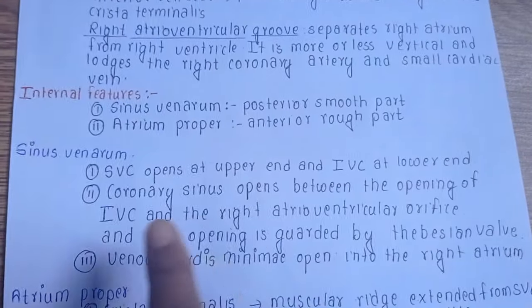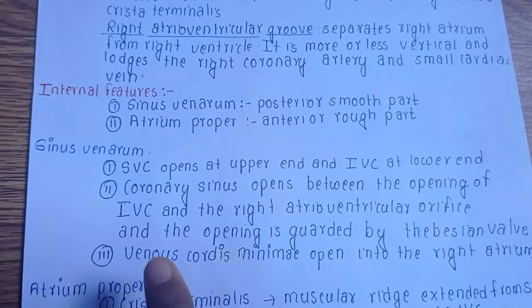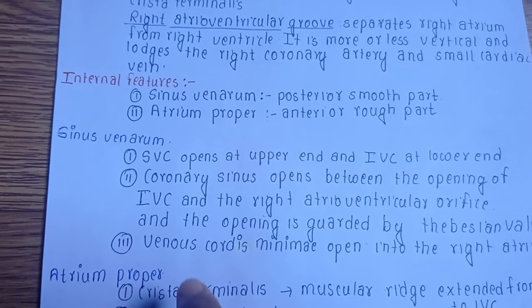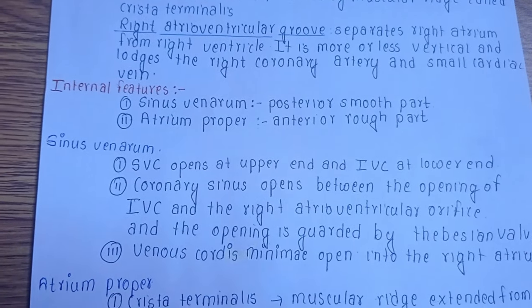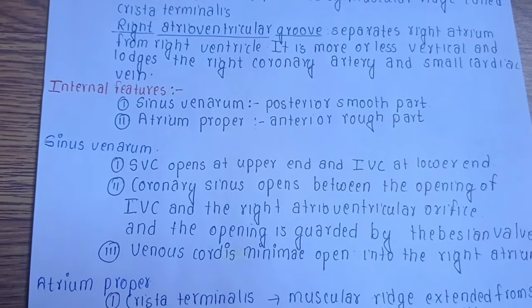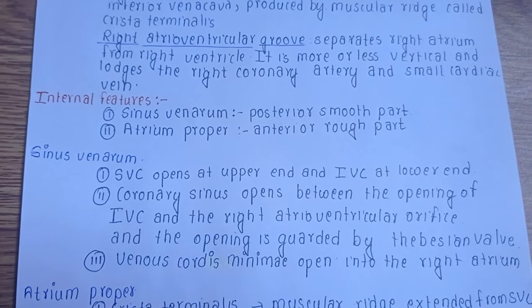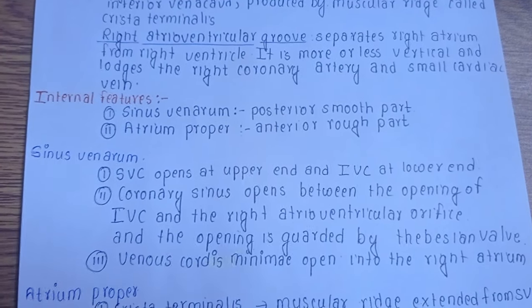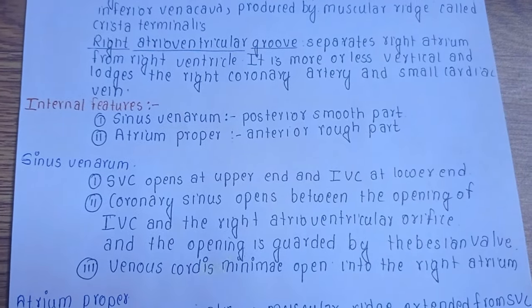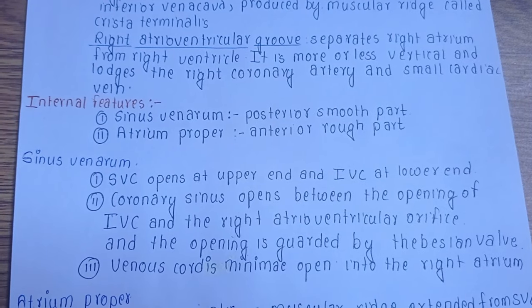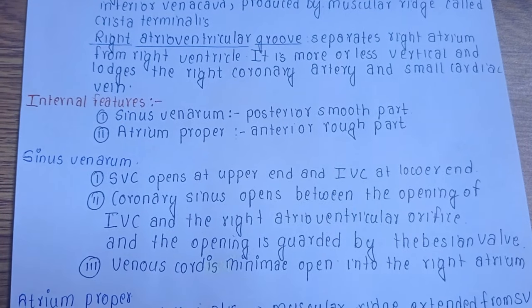The venae cordis minimae are numerous small veins present in the wall of all four chambers of the heart, and they open into the right atrium through small foramina.